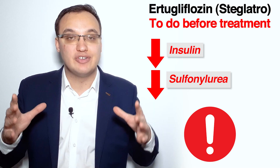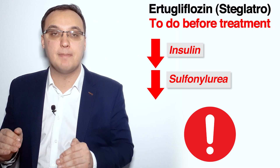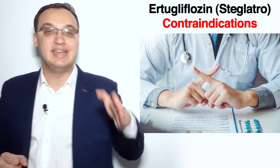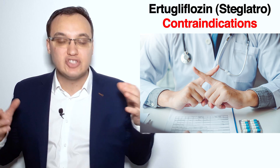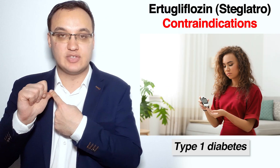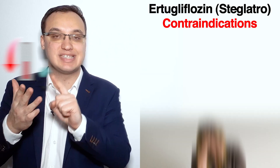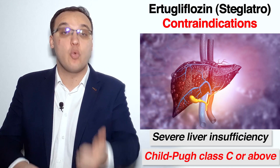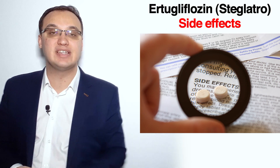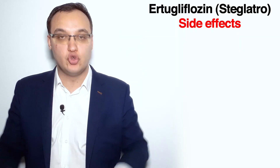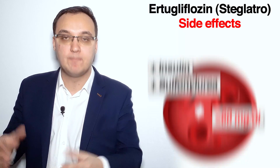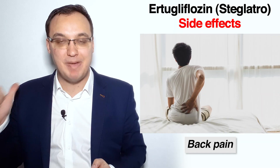It is important to reduce the dose of sulfonylurea or insulin by about 50 percent before starting Steglatro. The contraindications to Steglatro are: type 1 diabetes, diabetic ketoacidosis, hypotension, severe kidney insufficiency with GFR less than 60 ml per minute, severe heart insufficiency, and severe liver insufficiency with Child-Pugh class C or above. Side effects include nasopharyngitis, urogenital tract infections, polyuria, kidney insufficiency, hypoglycemia (especially with insulin and sulfonylurea), hypovolemia, thirst, back pain, and diabetic ketoacidosis.